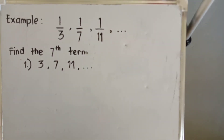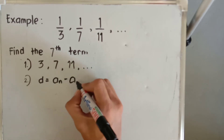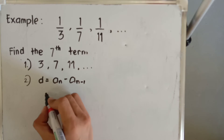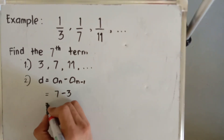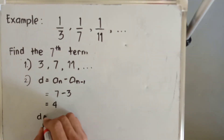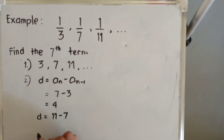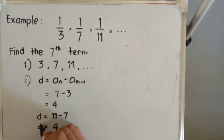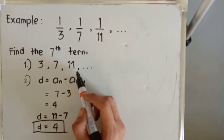After getting the reciprocals, we are now going to find the common difference. The common difference is the succeeding term minus the preceding term. So if our succeeding term is seven and the preceding term is three, we subtract to get four. Checking another: eleven minus seven also equals four. Therefore, the common difference of the reciprocated terms is equal to four.